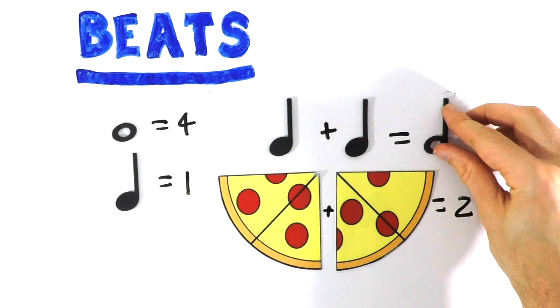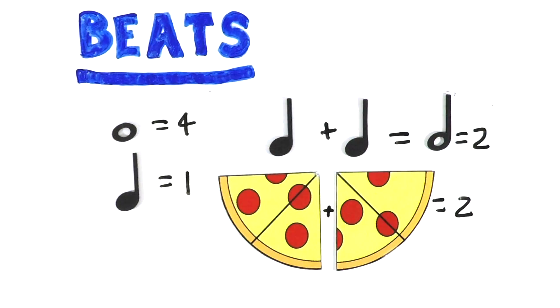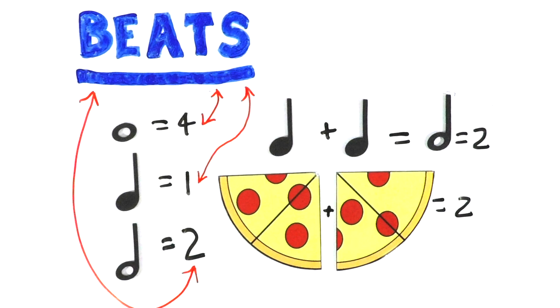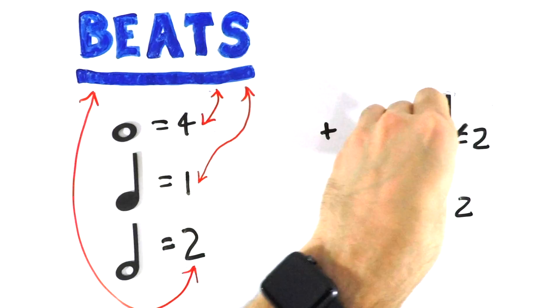So now you might be thinking two what or four what or one what? These amounts or these numbers are the numbers of beats that each one of these notes are going to be held for. So that means when we're playing a whole note, we would hold this note for four beats. And when we're playing a half note, we would hold that note for two beats. And when we're playing a quarter note, we would hold that note for only one beat. So that means out of these three notes, the whole note will be the longest note because it's held for four beats. And the quarter note will be the quickest note because it's only held for one beat.